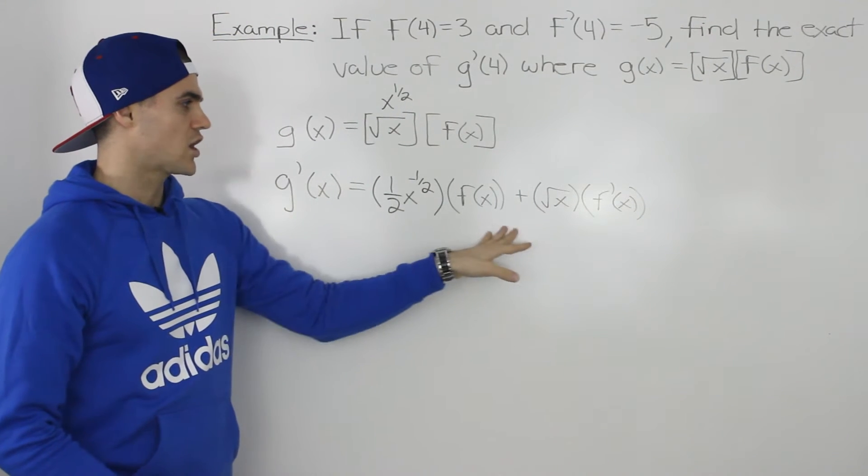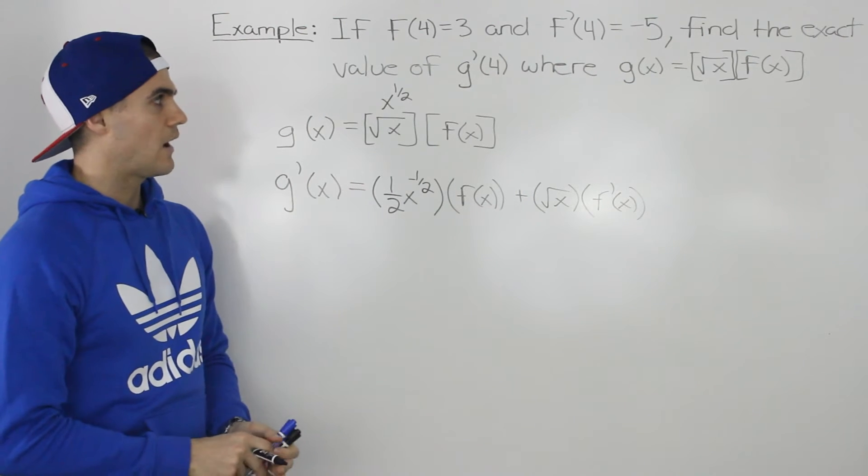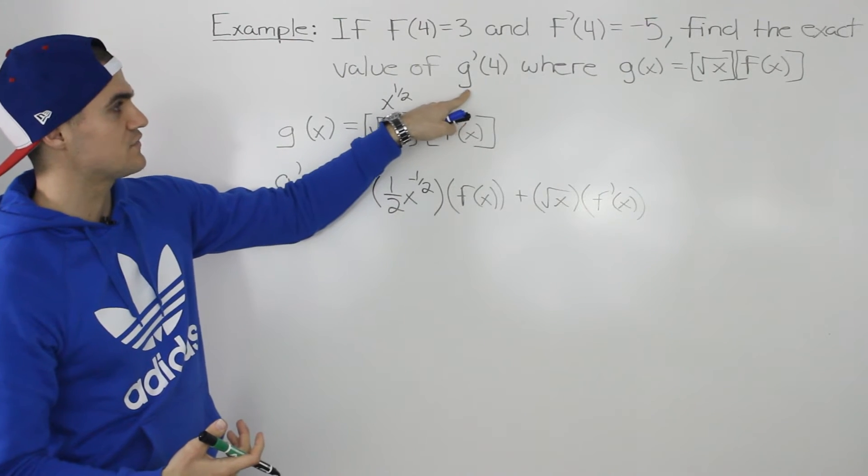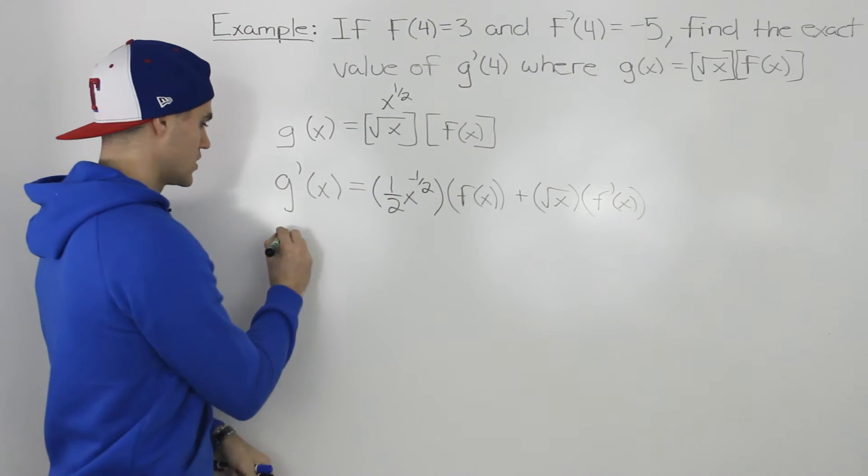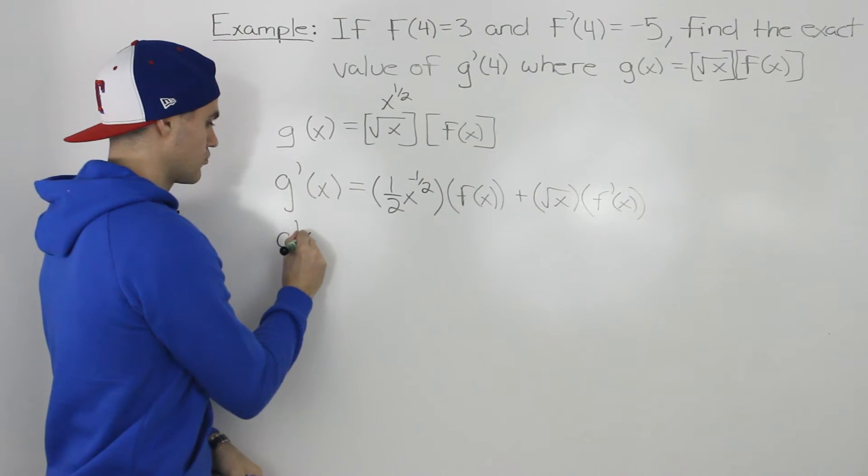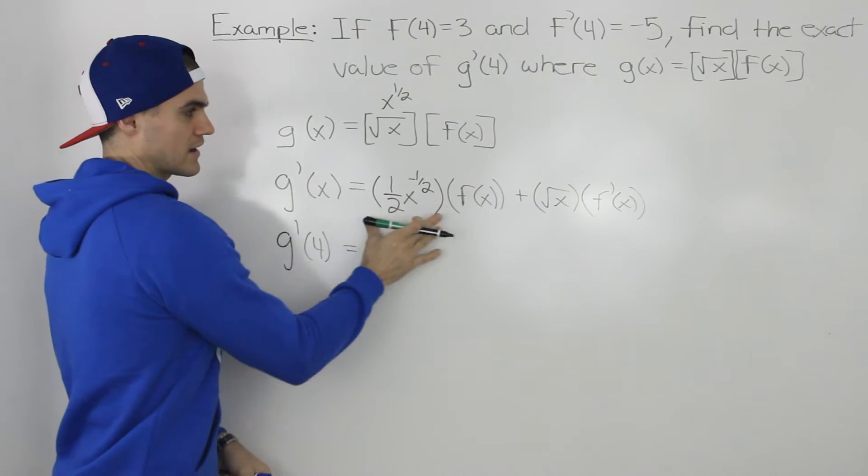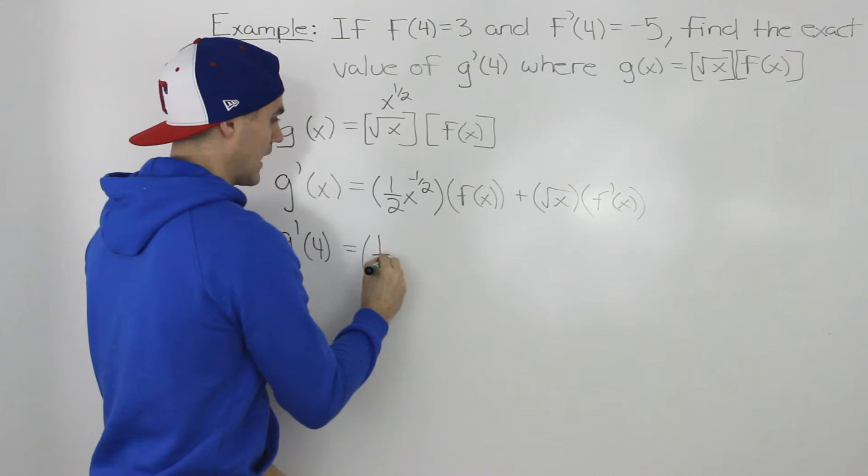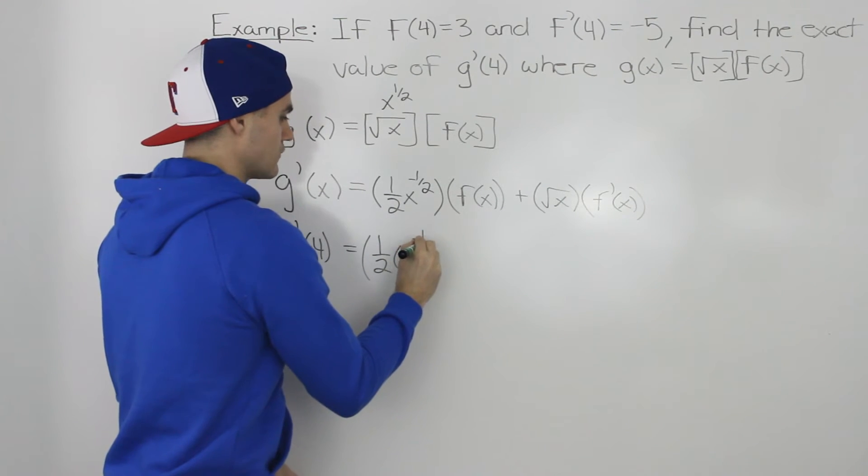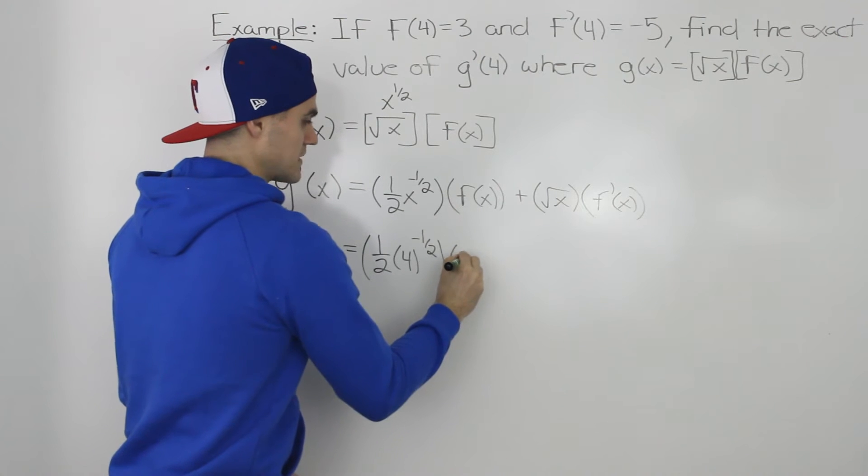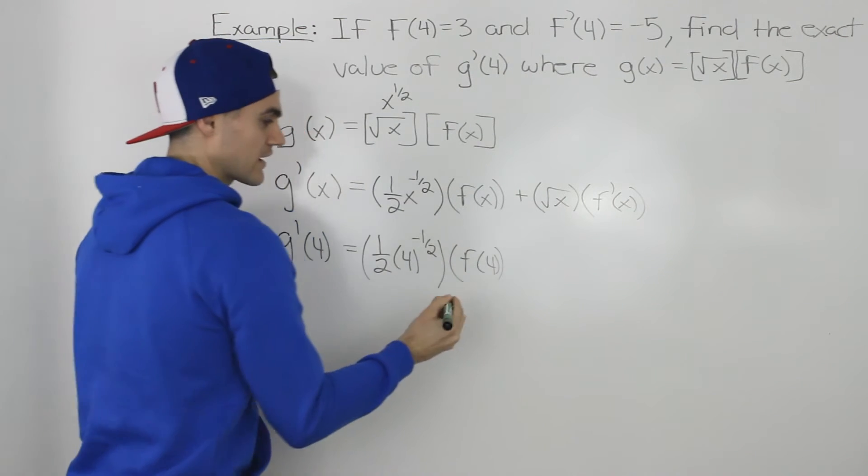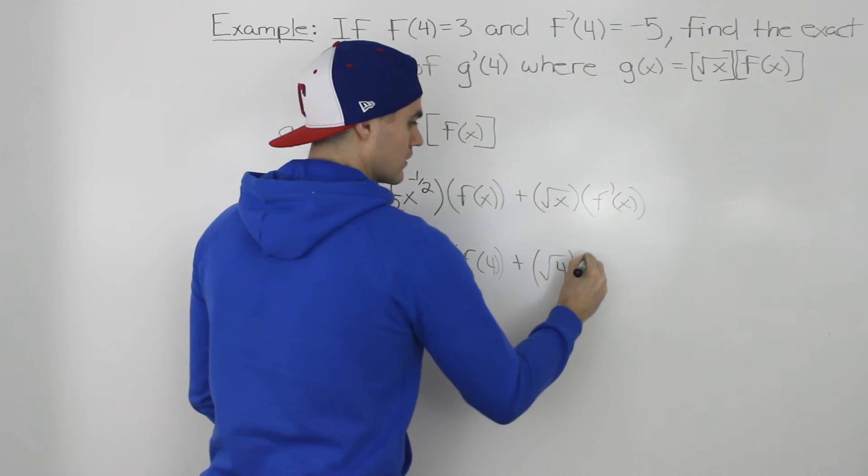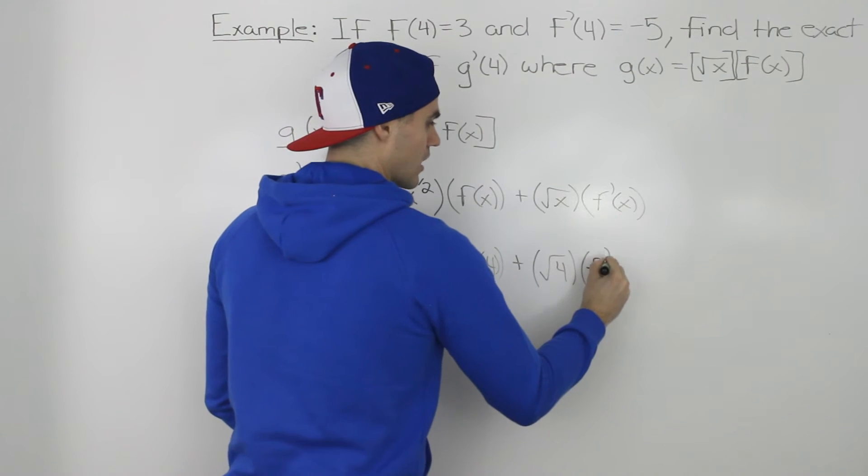So this here is the general derivative function for g(x). However, we're not looking for this general derivative, we're looking for the specific value of the derivative at an x value of 4. So we're looking for g'(4). Well, because g'(x) is this whole expression, we can just plug in 4 for all the x values. So we have (1/2) · 4^(-1/2) · f(4) + √4 · f'(4).